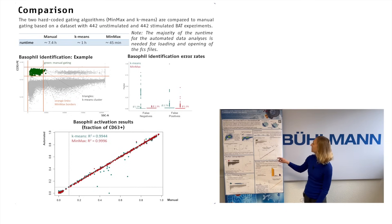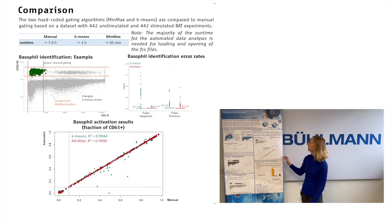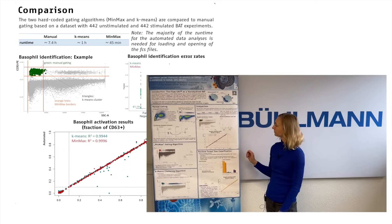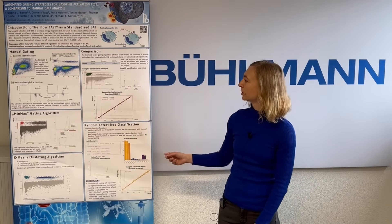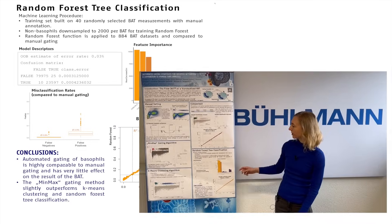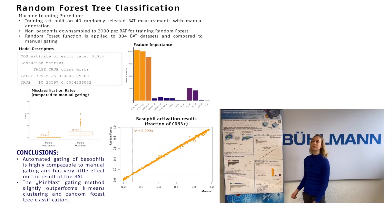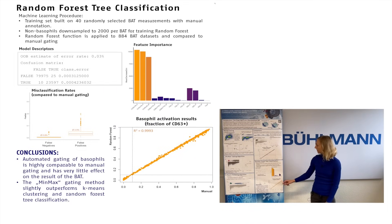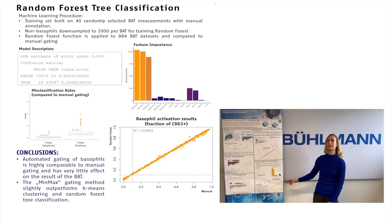If we compare the final end results that are important for diagnostics, both methods are highly comparable to the manual data analysis with R-square values well above 0.99. The same holds true for the machine learning approach. It shows a slight bias towards false positive identification of basophils, but also here the end result between the automated and the manual data analysis is highly comparable with R-square above 0.99.